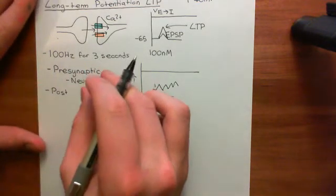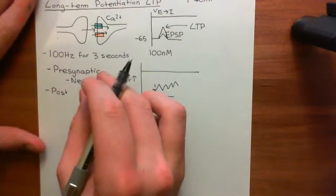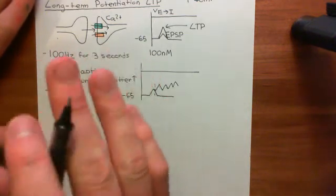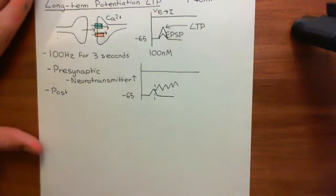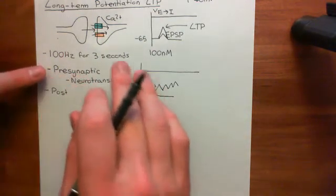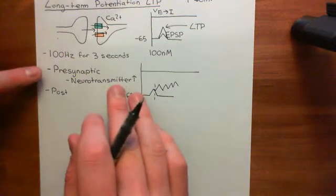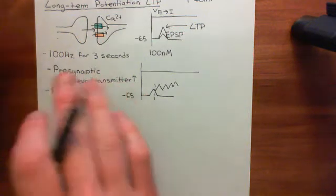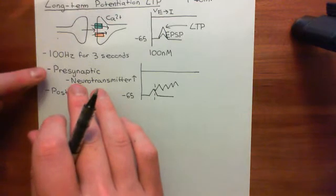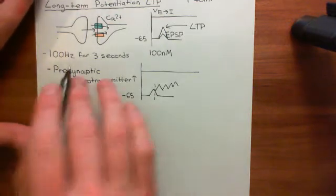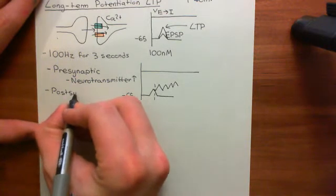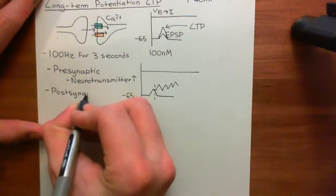The reason presynaptic has any popularity at all is because there are many examples in other species where glutamatergic synapse long-term potentiation — or at least sensitization — is achieved via presynaptic modulation. That's why presynaptic has weight. But the pathways I'm going to show you will all be postsynaptic.